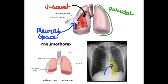Hi guys, so in this video we're going to be discussing the process of nitrogen washout and treating small, spontaneous pneumothorax. Pneumothorax, as we may know, is just accumulation of air in the pleural space. And the pleural space is going to be that space in between the parietal layers and the visceral layers of the lung.